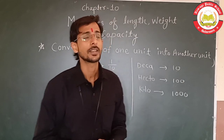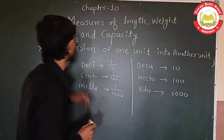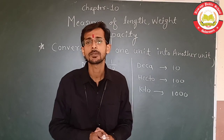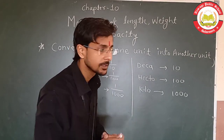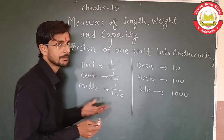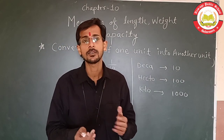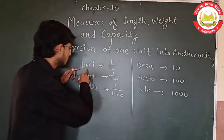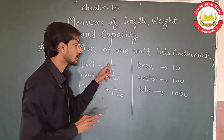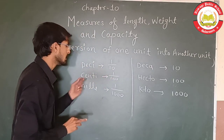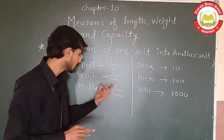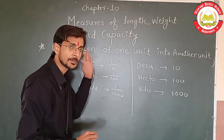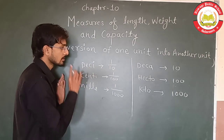Hello students. Now we are going to start a new topic: conversion of one unit into another. Before we start, we have to know the basic things. In the previous part, we discussed the placement chart of units. Starting with deci, which means 1 upon 10, centi means 1 upon 100, and milli means 1 upon 1000. These are all lower units.